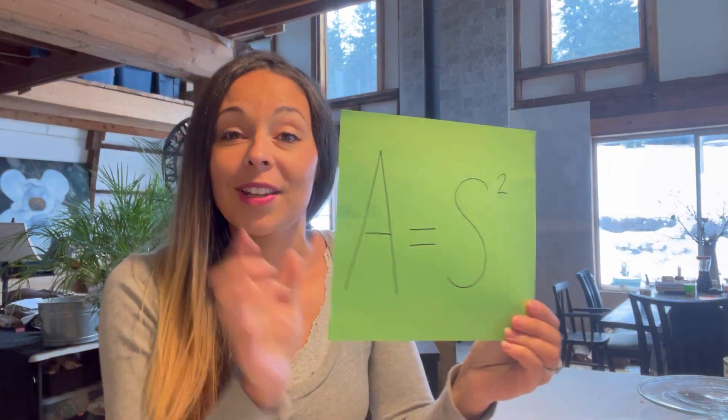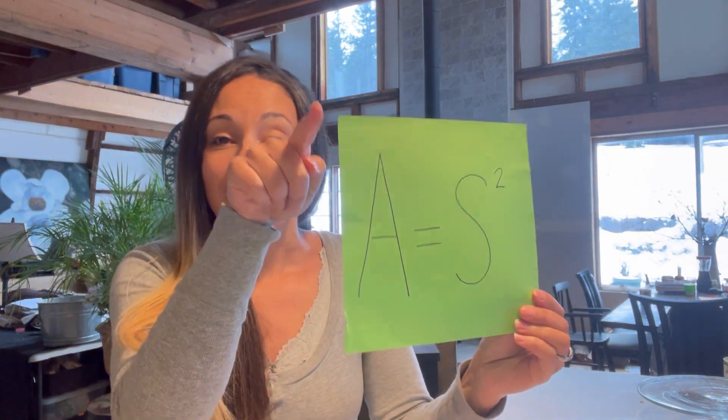This week we are continuing with our area formulas, moving on to the area of a square. We sing this to the tune of 99 Bottles. Last week we started with the rectangle, so this week is the area of a square equals the length of its side squared.